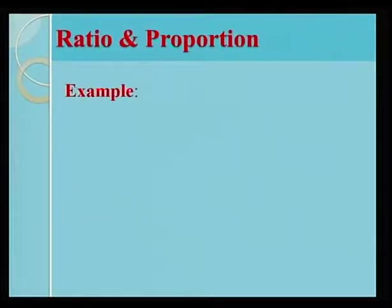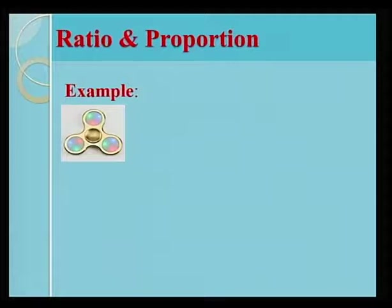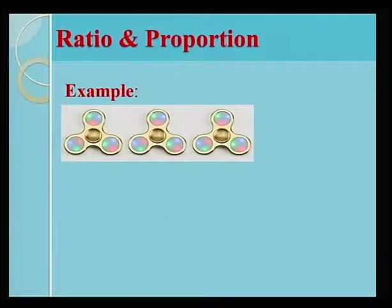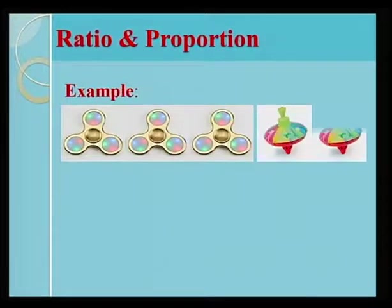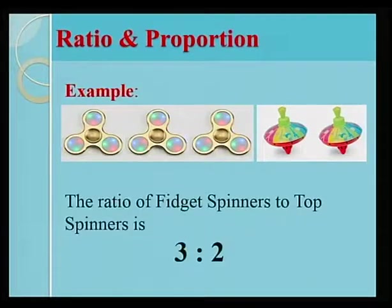We look at an example. I'm sure you will like these lovely pictures of fidget spinners and top spinners. The ratio of fidget spinners to top spinners is 3 is to 2.